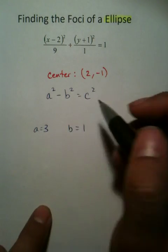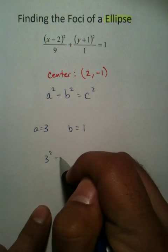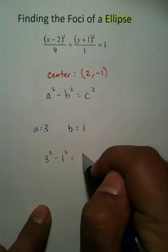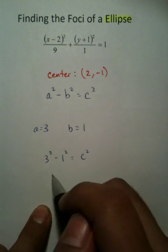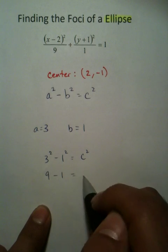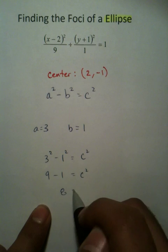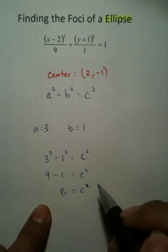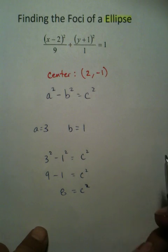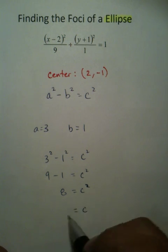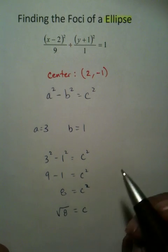Now, so to use this formula, you're going to say 3 squared minus 1 squared equals c squared, which is 9 minus 1, which is 8 equals c squared. But again, I'm asking for what's called a c value. That's more important. c equals radical 8.